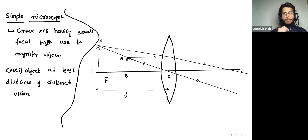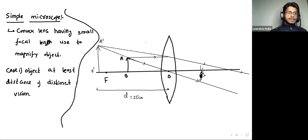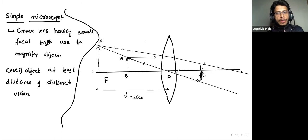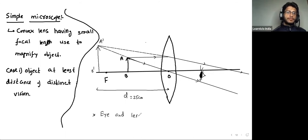We take all distances from the eye, but since the eye and lens are very close, taking distances from the lens is the same as taking from the eye — you can approximate them as equal throughout the optical instruments discussion.